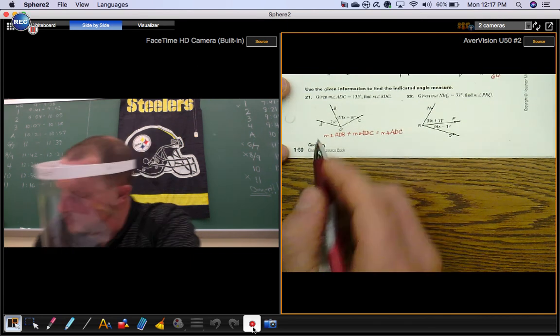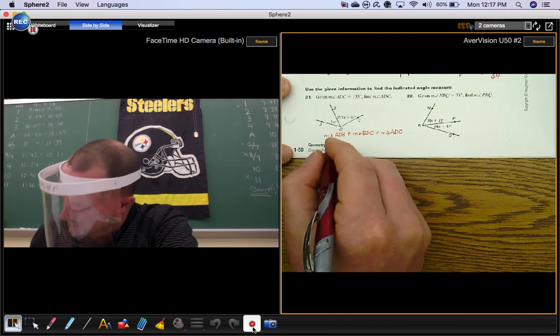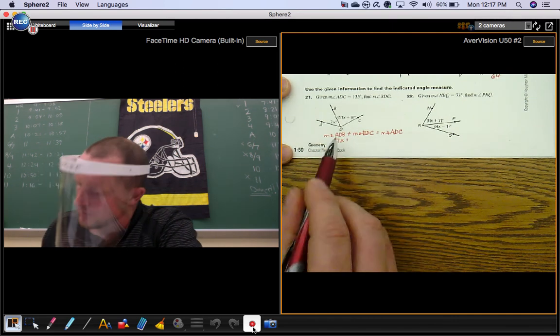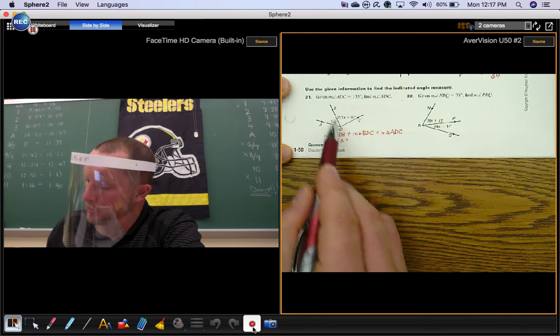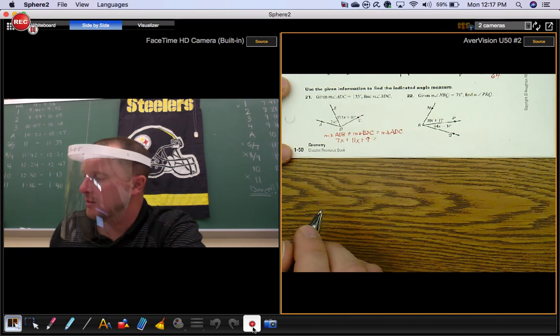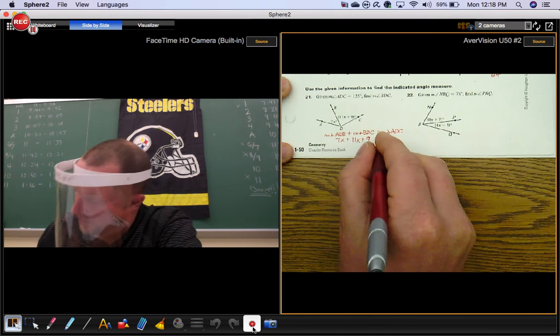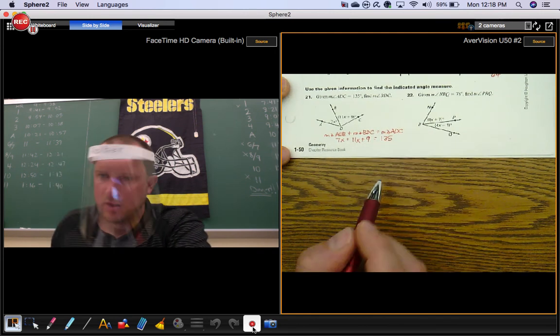Angle ADB has a measure of 7x. Angle BDC has a measure of 11x plus 9. The entire angle, the big angle, is 135 degrees. So now we've transitioned from geometry (that's your angle addition postulate) into algebra.